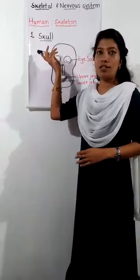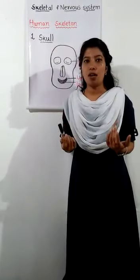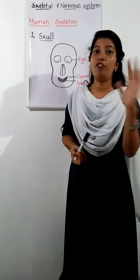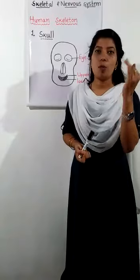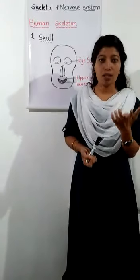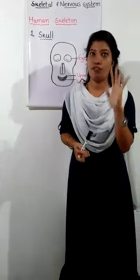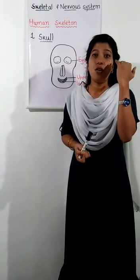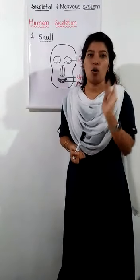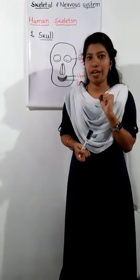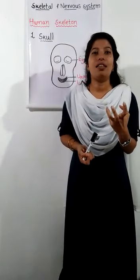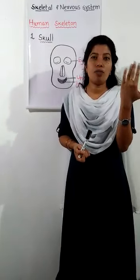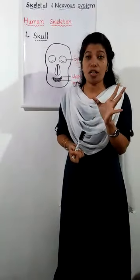First, the skull. The skull protects the most important part of our body — the brain. The skull is made up of different bones. Some of these bones protect our brain, while others make up the structure of our face. If we touch beneath our eyes, we can feel the ridge of the bone that forms the socket where our eye sits. The skull protects the brain.